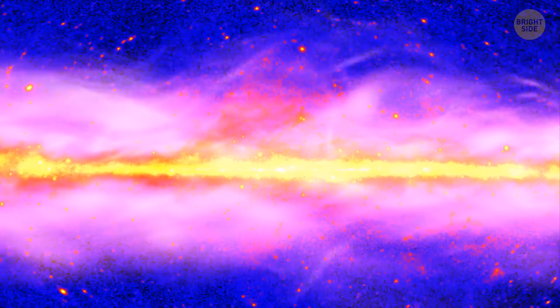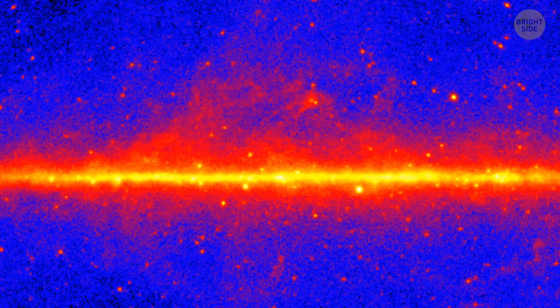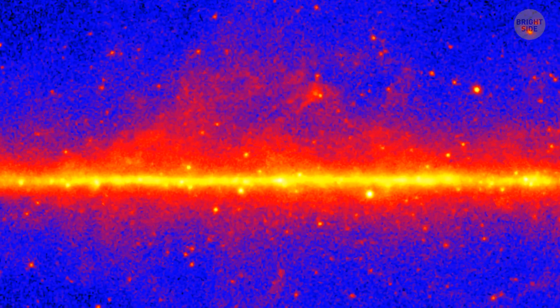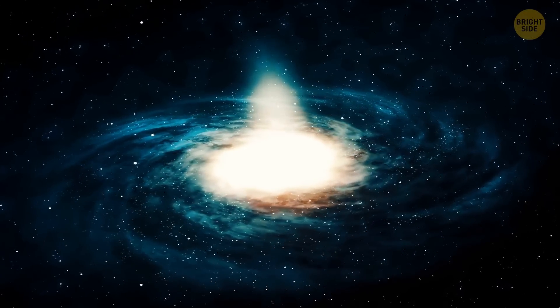That's why, when you observe the sky through the Gamma-ray Telescope, rather than with your own eyes, the difference is dramatic. So, when astronomers started to use the telescope, they noticed that the center of our galaxy emitted much more gamma radiation than, for example, its outskirts.